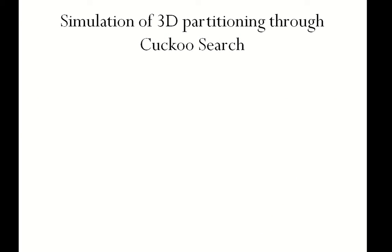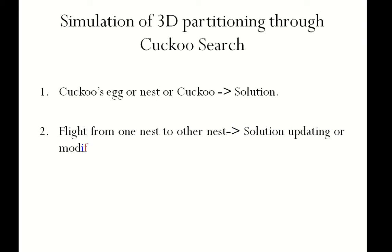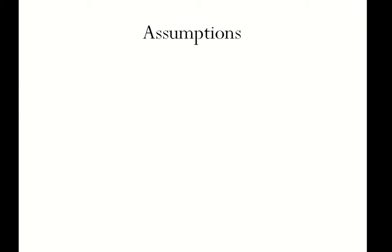Simulation of 3D partitioning through cuckoo search. We represent a cuckoo egg or a nest or a cuckoo itself as a solution of our algorithm. Flight of a cuckoo from one nest to other nest is simulated as a solution gradation or modification. If a host bird identifies a cuckoo egg, this means the generated solution is not good enough for the further processing. Before going to the algorithm flow, there are some assumptions considered by us for the ease of implementation.